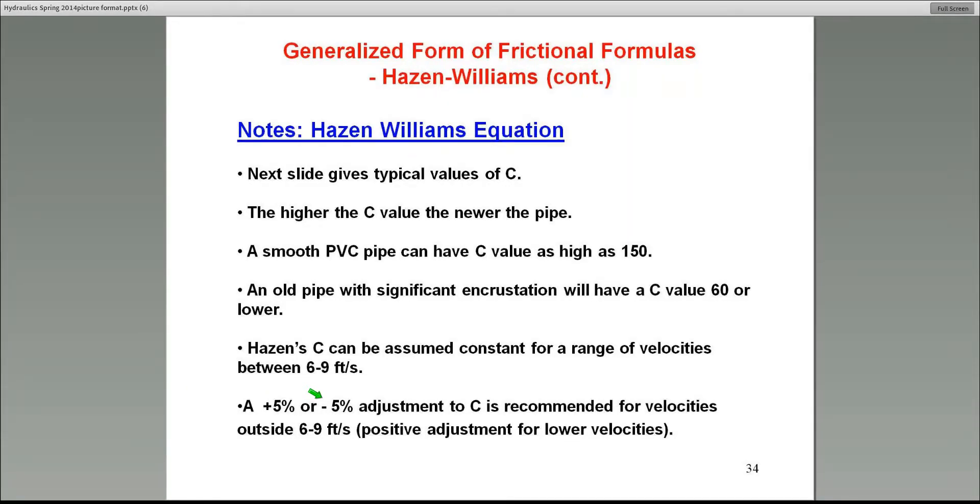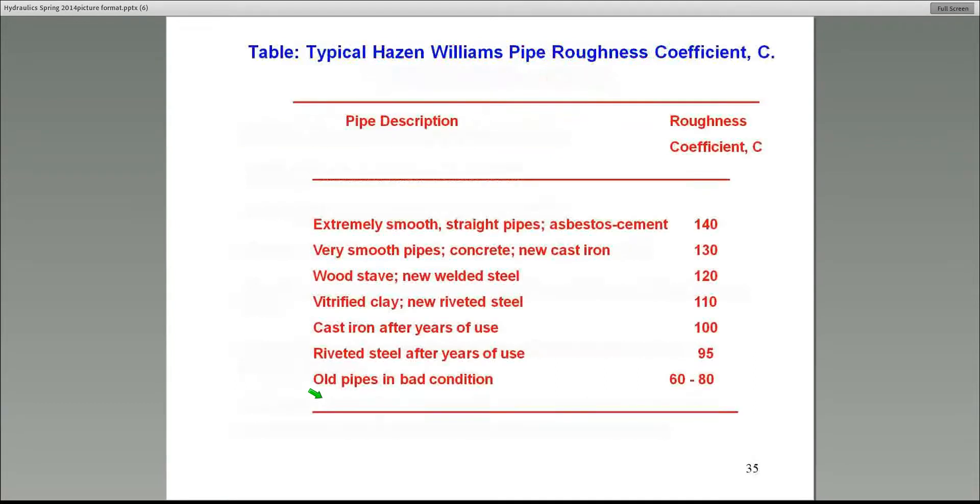But unlike the Darcy-Weisbach equation, you don't have the trial and error to deal with in this situation. Here are the typical C values in this table. Again, a cast-iron pipe, for example, right here. You've got a C of 130. A steel pipe has a C of 120. So, you can consult this table from the description of the problem, select your C value.